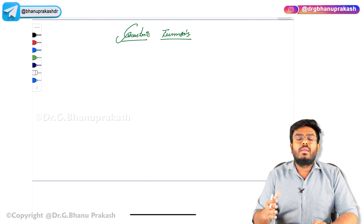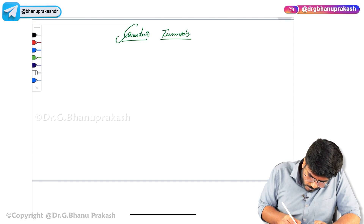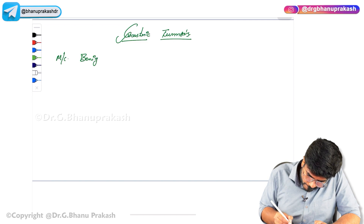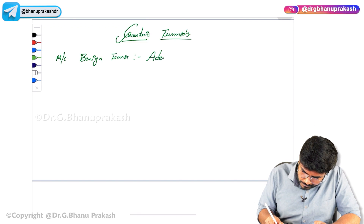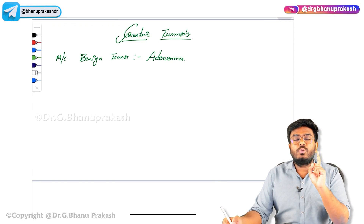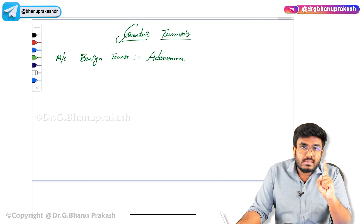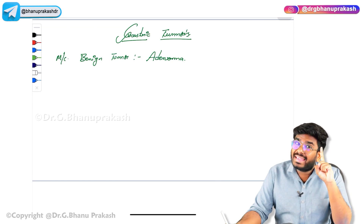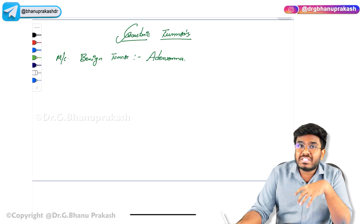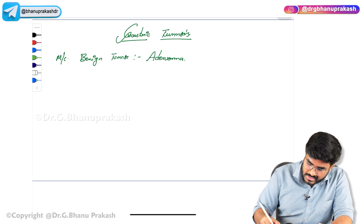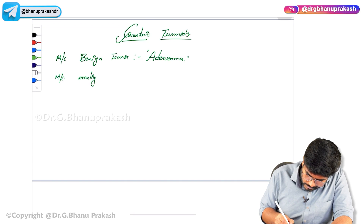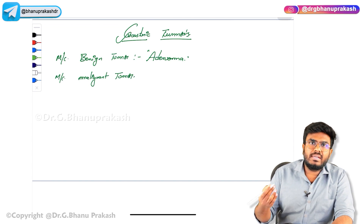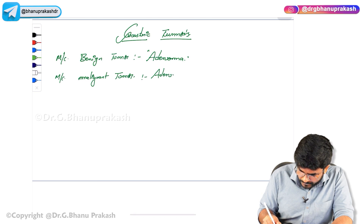Gastric tumours can be of two types: malignant as well as benign. The most common benign tumour in the stomach is adenoma. Don't confuse with the esophagus — in the esophagus, squamous cell carcinoma is the most common cancer. Now talking about gastric cancers, the most common malignant tumour is adenocarcinoma.